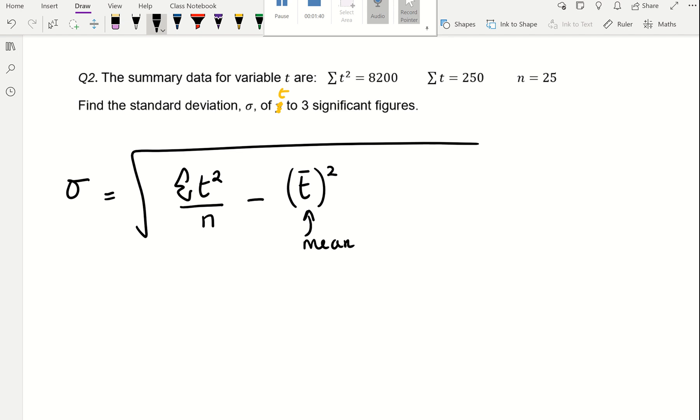The first thing I would do is find the mean. The mean is the sum of t divided by the total frequency. 250 divided by 25 is 10.